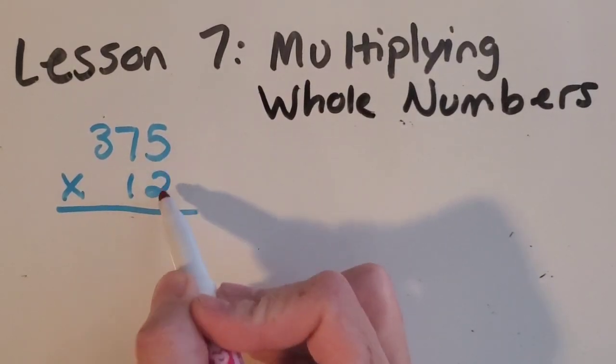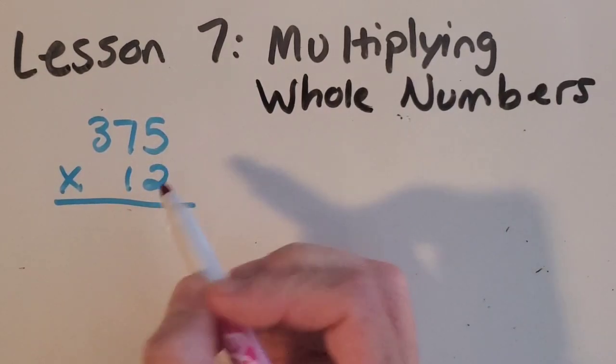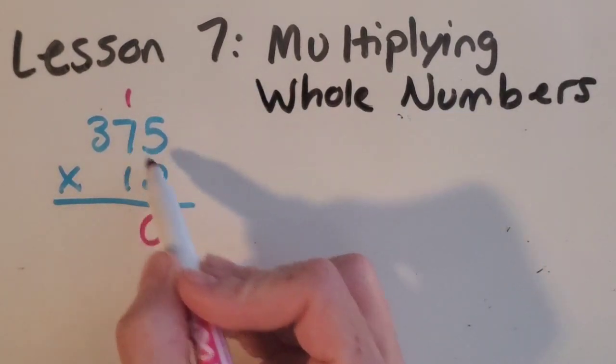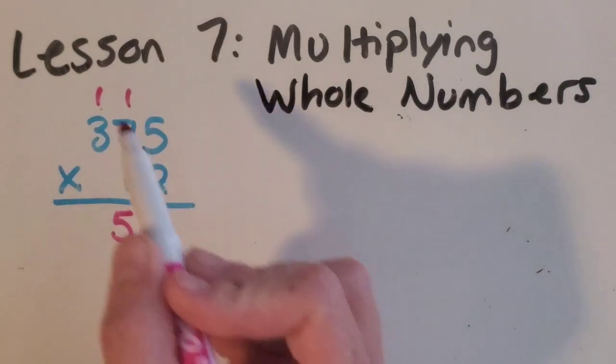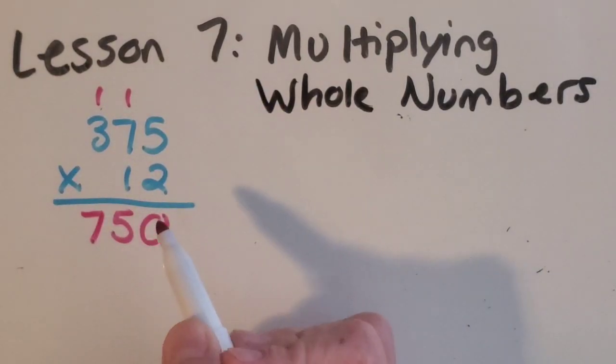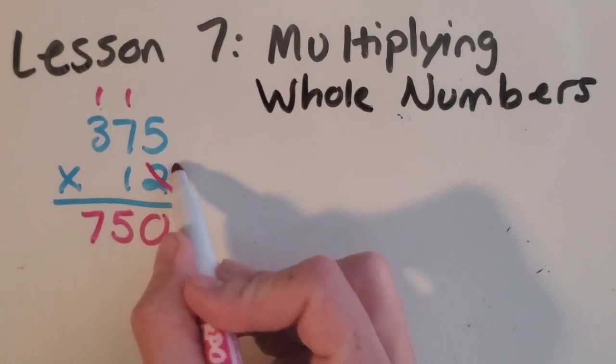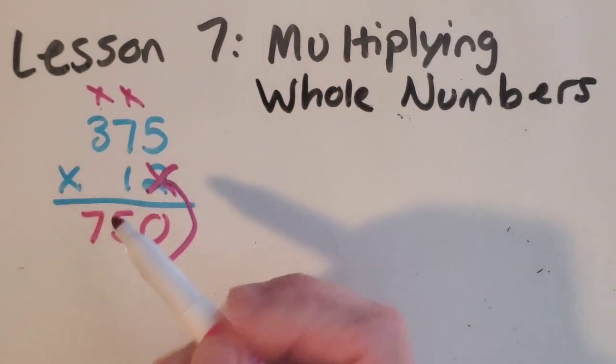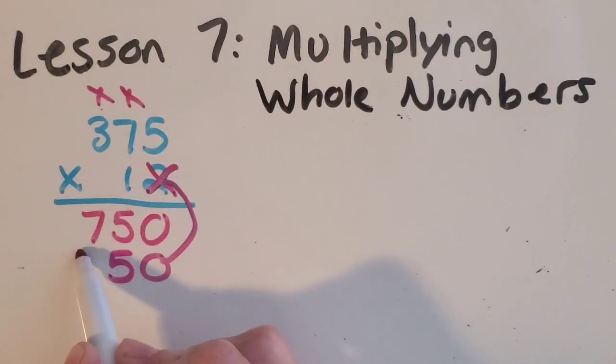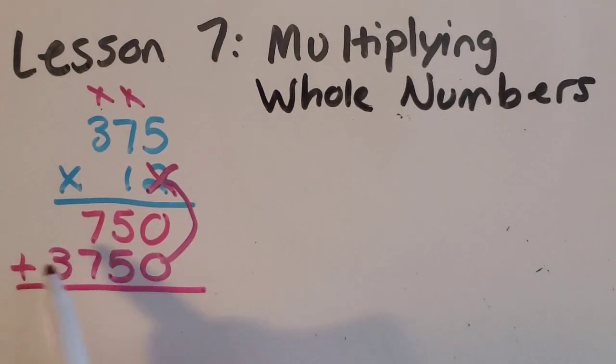So I'm going to start with my ones place and multiply everything times 2. 5 times 2 is 10. 4 times 2 is 14, plus the 1 is 15. And then 3 times 2 is 6, plus the 1 is 7. Then I'm going to do my trick. Do you remember it? X, O, no, go. And then everything times 1. 5 times 1, 7 times 1, 3 times 1. That was easy. Then I'm going to add my partial products. So I need 4,500 oak logs.